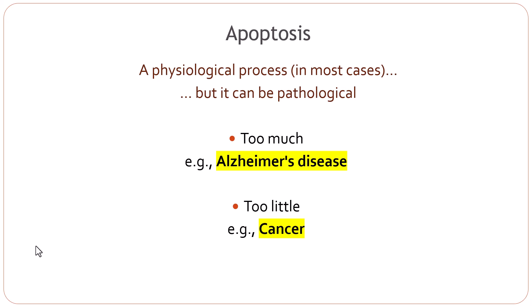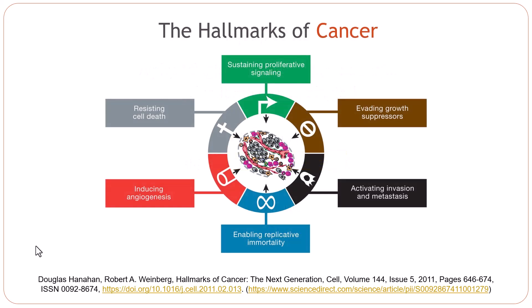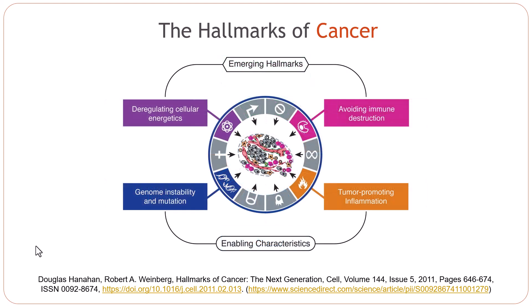After looking at all these features of cancer cells, we can now summarize the hallmarks of cancer cells. They resist cell death, they have sustained proliferative signaling, they evade growth suppressors, they activate invasion and metastasis, and they have replicative immortality — these cells basically become immortal. They also secrete chemicals that cause blood vessels to grow near the tumor cells. The emerging hallmarks are deregulating cellular energetics and avoiding immune destruction. The two enabling characteristics are genomic instability and mutations, and tumor-promoting inflammation.